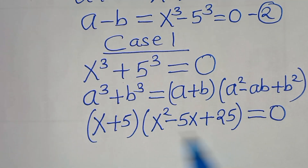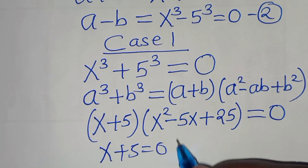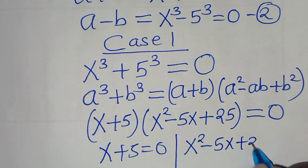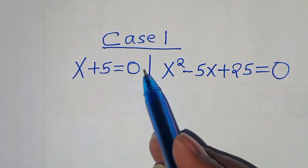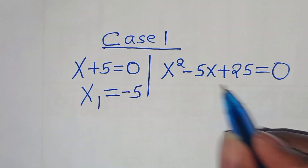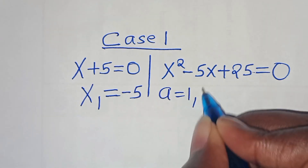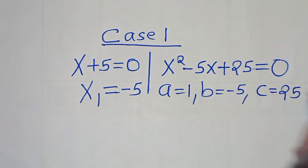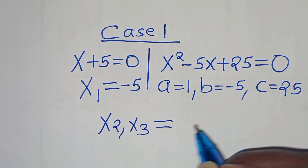We have two parts here. The first part is x + 5 = 0, giving x₁ = −5. The second part is the quadratic equation x² − 5x + 25 = 0, with a = 1, b = −5, and c = 25. We solve for x₂ and x₃ by applying the quadratic formula: minus b, plus or minus the square root of b squared minus 4ac, all divided by 2a.